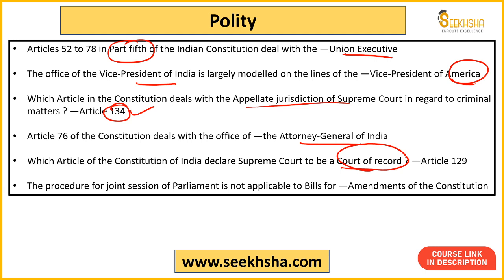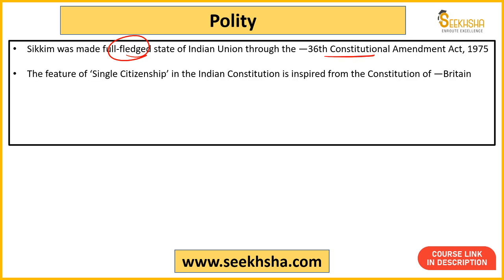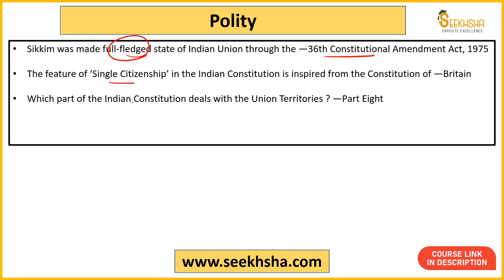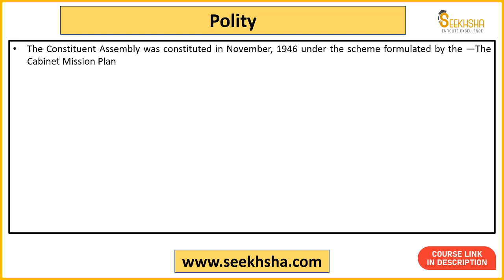Regarding Joint Session of Parliament: a Joint Sitting cannot be called for Constitutional Amendment Bills — it is individual, and the bill must pass in Rajya Sabha. There is no Joint Session provision in Constitutional Amendments. Sikkim became a full-fledged state of India through the 36th Constitutional Amendment Act. The Constituent Assembly was built in November 1946 based on the Cabinet Mission Plan.